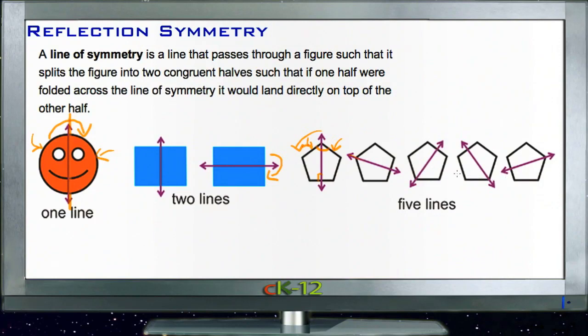Now reflection symmetry specifically says that the line represents what happens if you were to look at both sides of the line you've drawn as reflections of each other. The figure should be the same on both sides as if it were a reflection in a mirror.